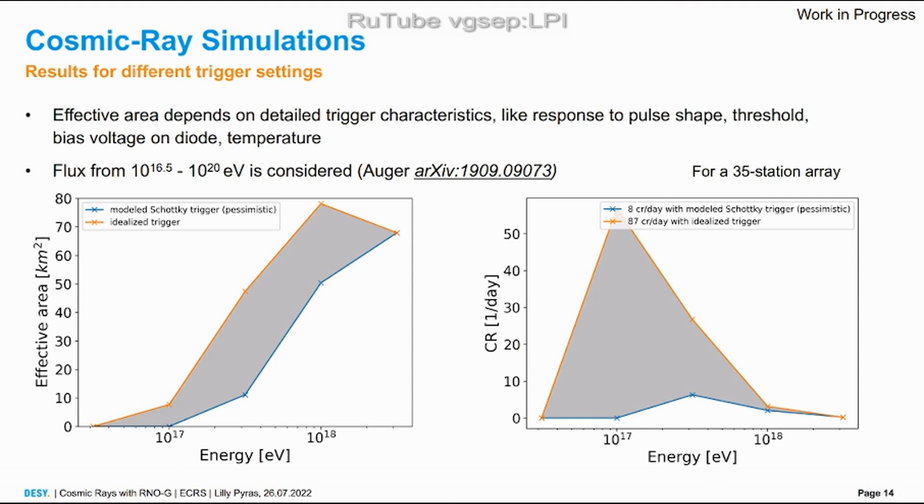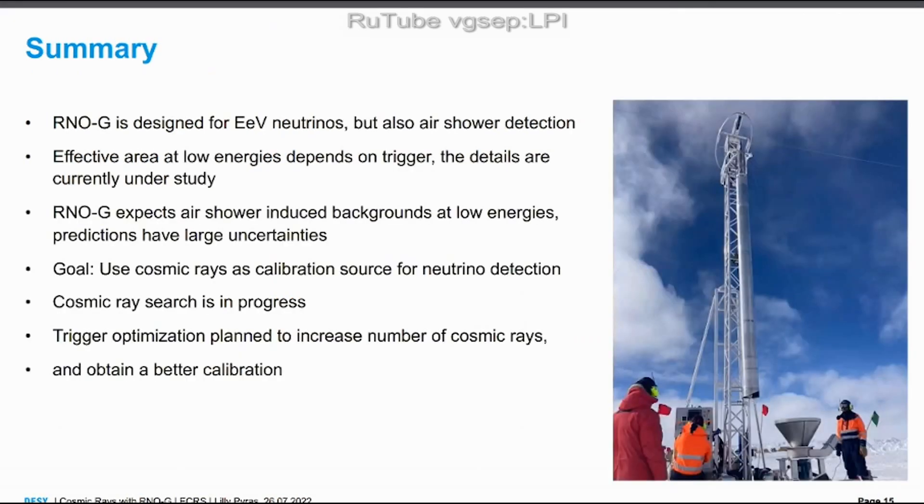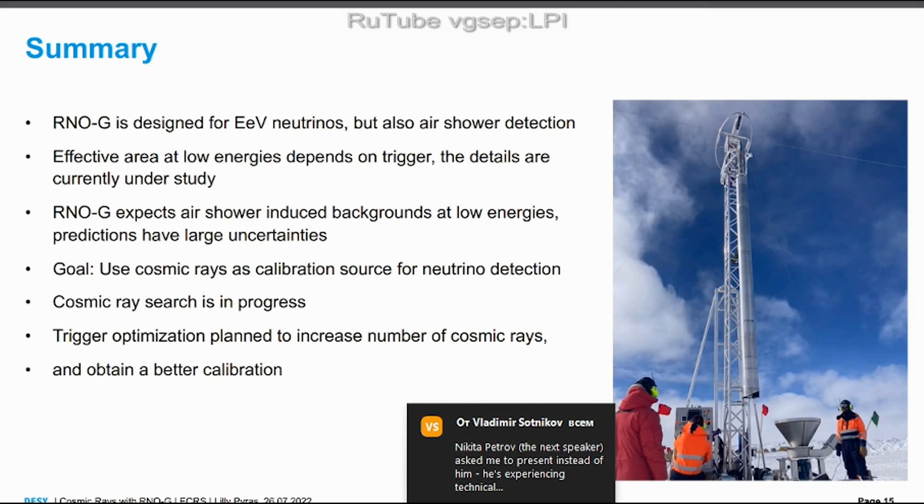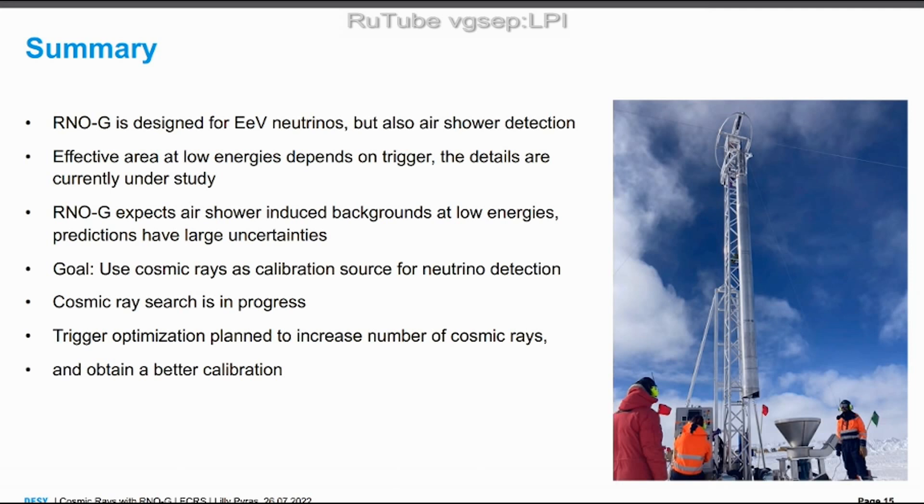That's quite sad but it also gives us a reason to optimize our trigger. Let me summarize it for you. RNO-G is designed to detect EV neutrinos but also detects air showers. The effective area really depends on the trigger characteristic which are currently under study. The background prediction has large uncertainties but the goal is that we can use all these background events as a calibration source and to verify that our detector works. The cosmic ray search is in progress as well as the trigger optimization to increase the numbers of cosmic rays and also obtain a better calibration source. Thank you.